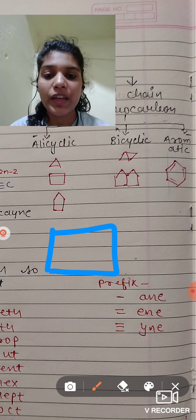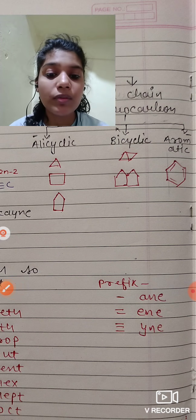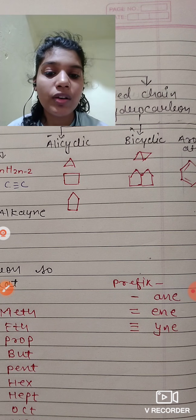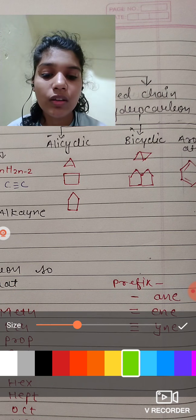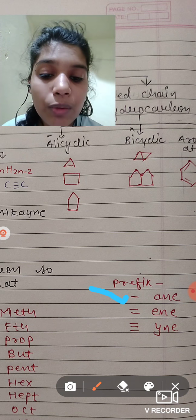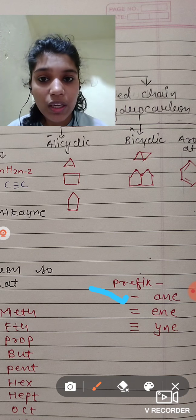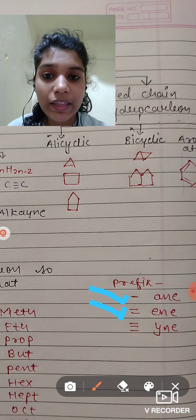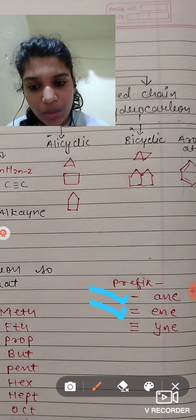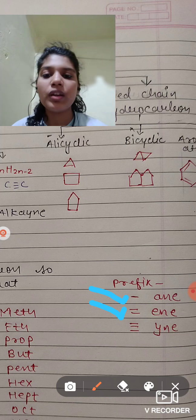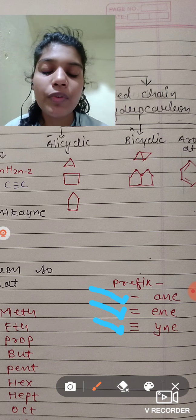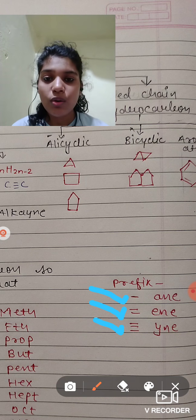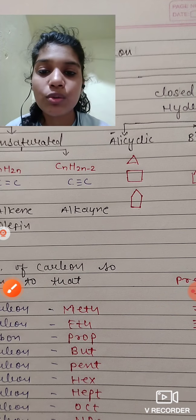That's all about my topic and these prefixes must have this because we will use this. Whenever single bond, they will write A-N-E. When double bond, we will write down E-N-E. Every meth, eth, prop, put, print, I am talking about this. If we talk, if we have triple bond, then we what will write down Y-N-E. This is my today's topic.